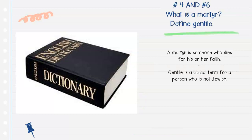Questions number four and number six — you'll notice we skipped number five; I'll go back to that in just a second. These are just quick definitions: What is a martyr and define Gentile? A martyr is someone who dies for his or her faith. And Gentile is a biblical term for a person who is not Jewish. So question number four is martyr, and question number six is Gentile.